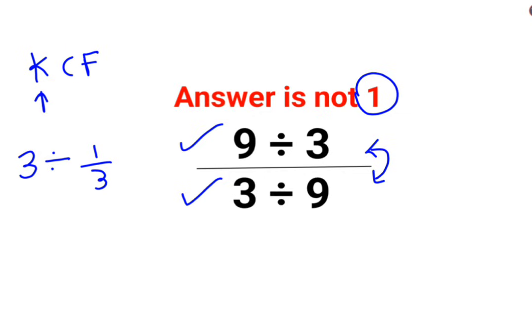where K stands for keeping the first number as it is, C stands for changing the division sign to multiplication, and F stands for flipping or taking reciprocal of 1 upon 3 which is 3. So answer for this question is supposed to be just 9.